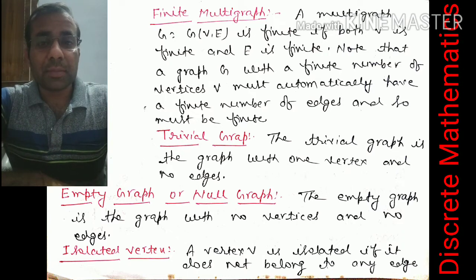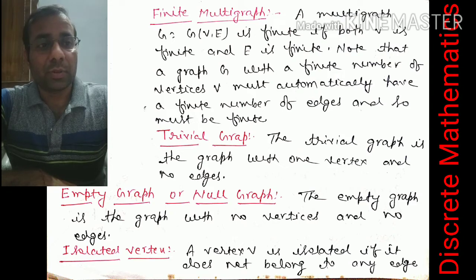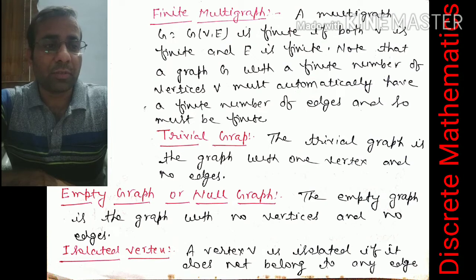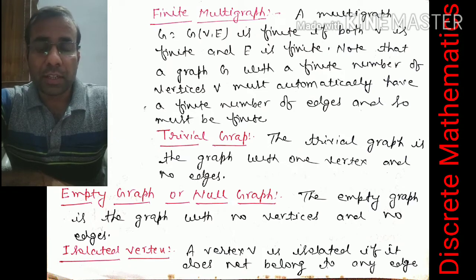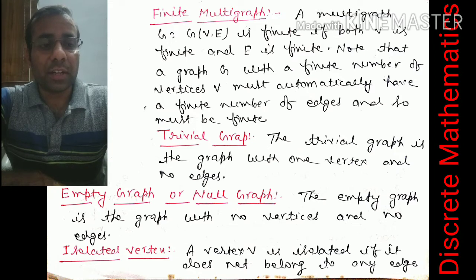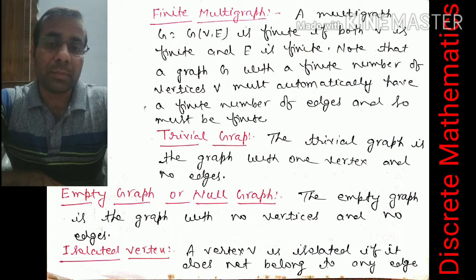Next topic: a finite multigraph. A multigraph G = G(V, E) is finite if both V is finite and E is finite. A graph G with a finite number of vertices must automatically have a finite number of edges. Next is the trivial graph — a graph with one vertex and no edges. If we have only one vertex we cannot form any edges.